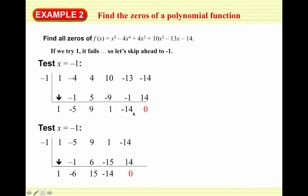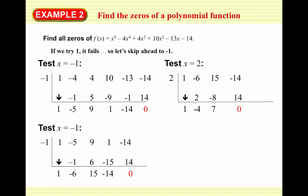You always try the value you just worked with to see if it's a double zero. When we try x = -1 again with coefficients 1, -5, 9, 1, -14, it actually works again — remainder of 0. So our original polynomial equals (x + 1)(x + 1) times the new quotient x³ - 6x² + 15x - 14. Now we work with this reduced cubic, and we keep trying negative 1 — this time it doesn't work.